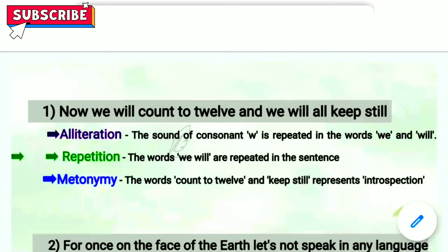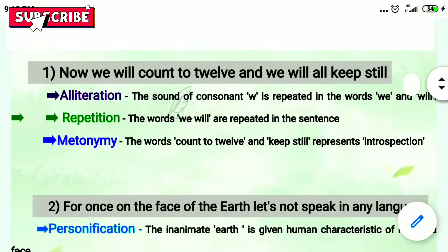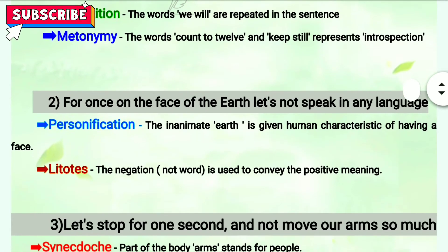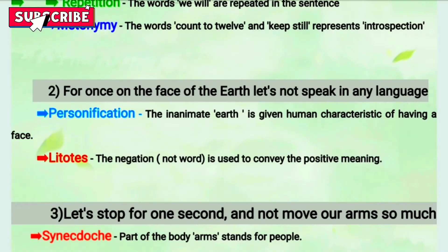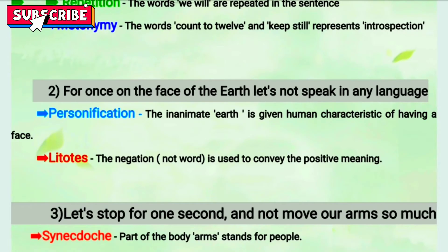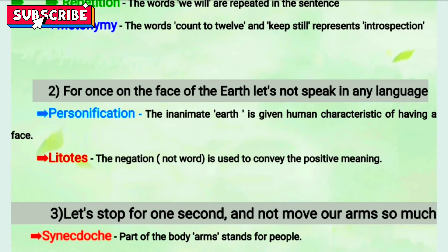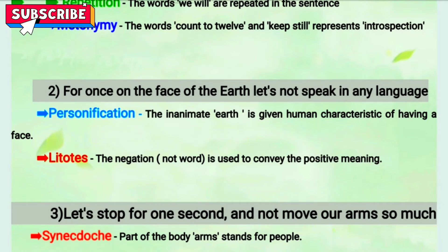Second line: 'For once on the face of the earth, let's not speak in any language.' The first figure of speech is personification, because earth is given the quality of having a face. Earth doesn't have a face — humans have faces — so that is why it is personification.